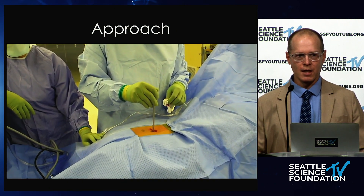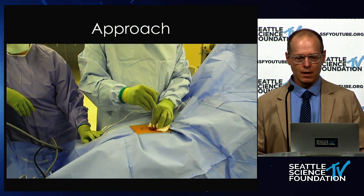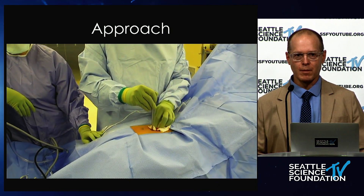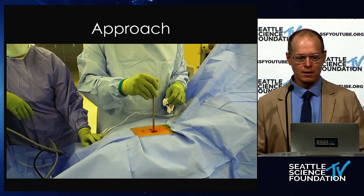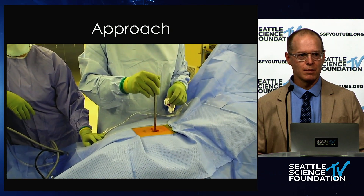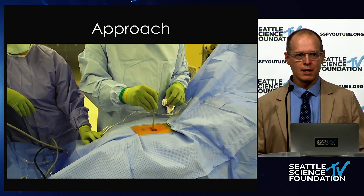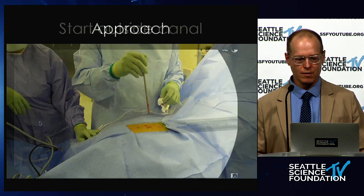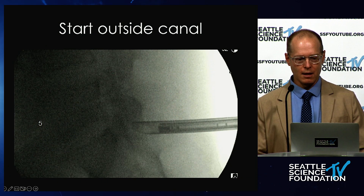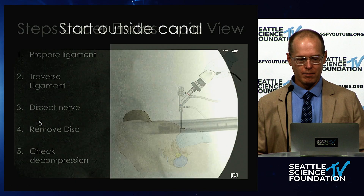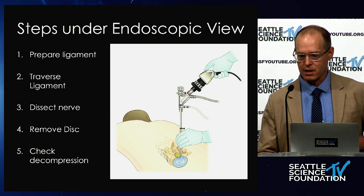For the approach, make the skin incision and fascial incision, and then use a single-stage dilator that goes down directly onto the ligamentum flavum. You can move your hands around to palpate bony landmarks, but the less you do that, the less bleeding you'll have. So the more direct the approach the better — typically try to use fluoro for that. You're going to be starting outside the canal, and at this point place your tubular retractor, which is beveled.